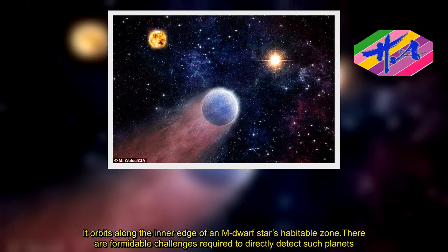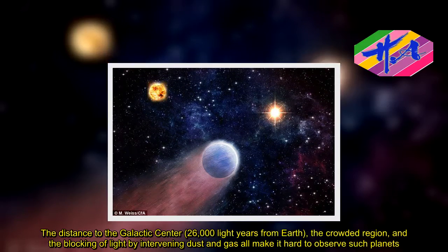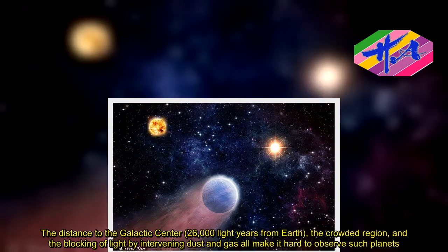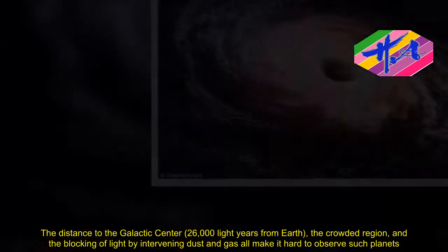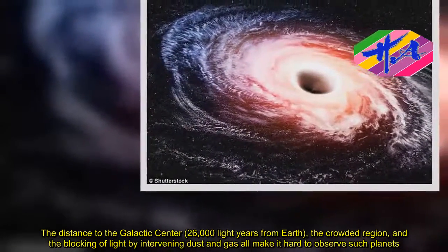The distance to the galactic center, 26,000 light-years from Earth, the crowded region, and the blocking of light by intervening dust and gas all make it hard to observe such planets.